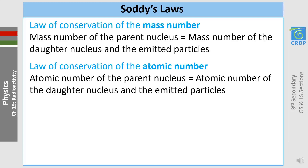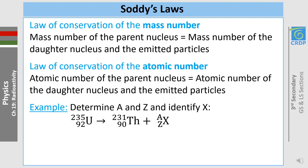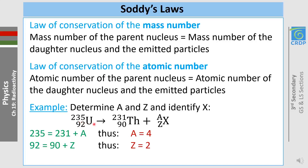To illustrate, consider this reaction where uranium disintegrates into thorium and a certain element or particle X. To identify X, we need to find A and Z using those conservation laws. Law of conservation of mass number: 235 equals 231 plus A, so A equals 4. Then 92 equals 90 plus Z, so Z equals 2. With A=4 and Z=2, X is helium — an alpha particle.